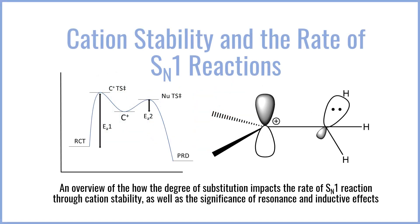Hey everyone, in this video we're going to be talking about the stability of various cations and how that impacts the rate of SN1 reactions. We're going to be taking a look at different reaction coordinates to understand how cation stability impacts the energy of a transition state, and also looking at things like hyperconjugation and how that impacts the stability of cations based on their substitution.